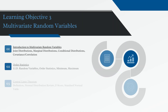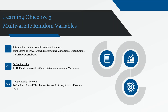This video starts off with an introduction to multivariate random variables, so mainly we'll be talking about the bivariate case. We'll define joint distributions, talk about marginal distributions and conditional distributions, and covariance and correlation. We'll define IID random variables and how they apply to order statistics, specifically the minimum and maximum. Finally, we'll talk about the central limit theorem and review the normal distribution.